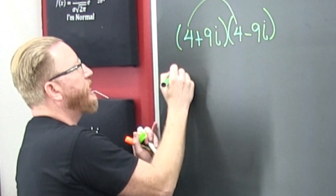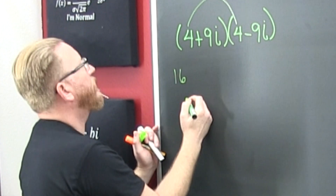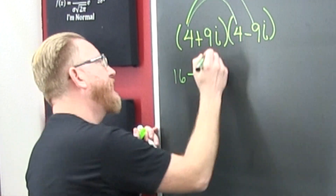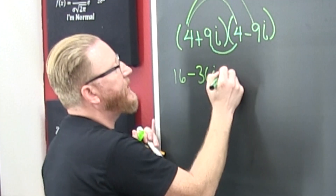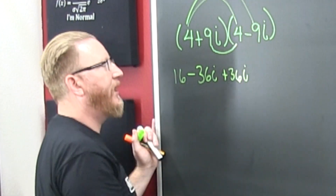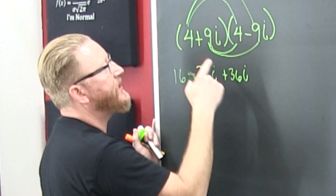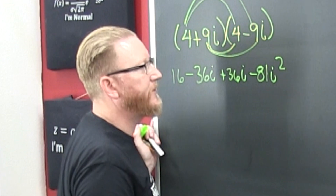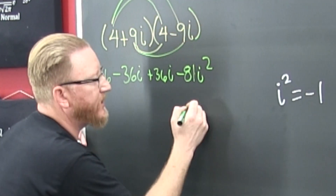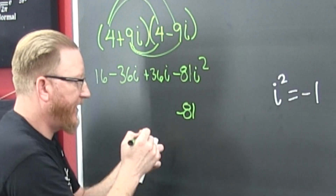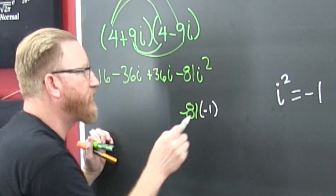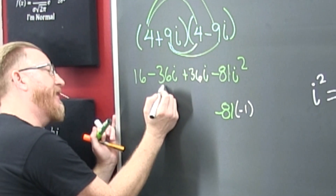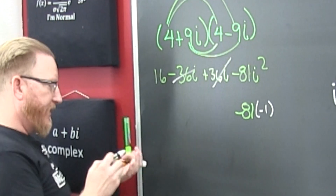Alright, let's FOIL. Four times four is 16. Then four times nine i is minus 36i. Then the inner product is plus 36i. Finally, Last: that's minus 81i², which evaluates to minus one, so that's 81 times negative one. Now look — the 36i and minus 36i cancel out.